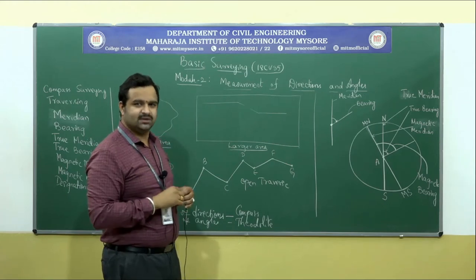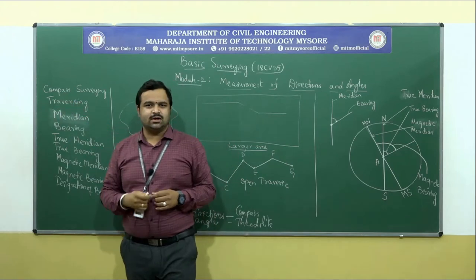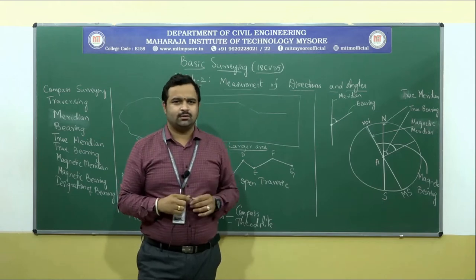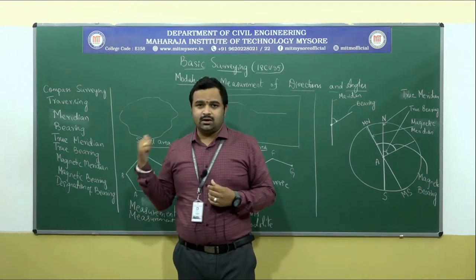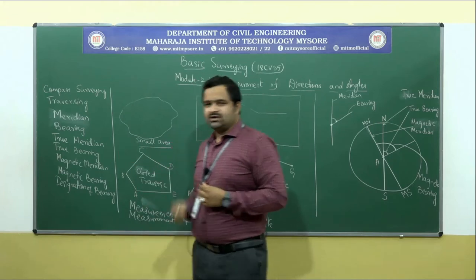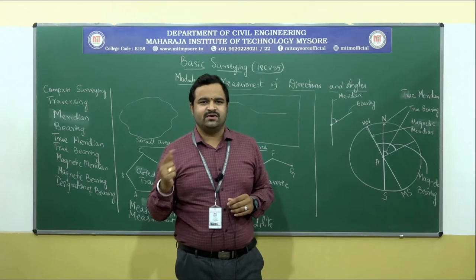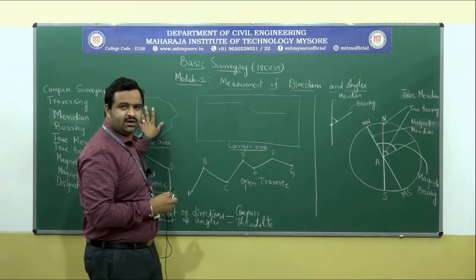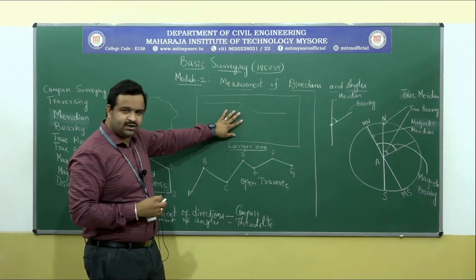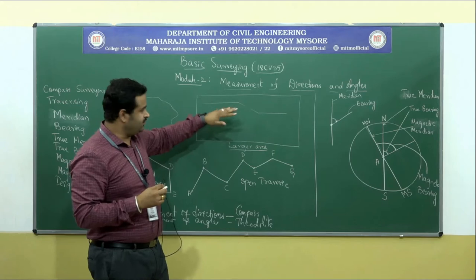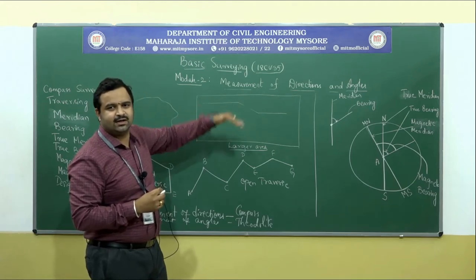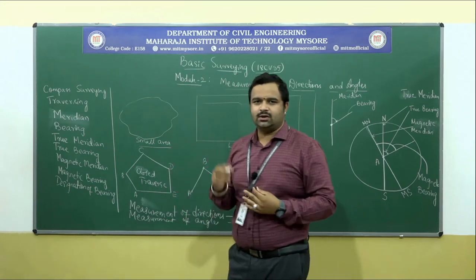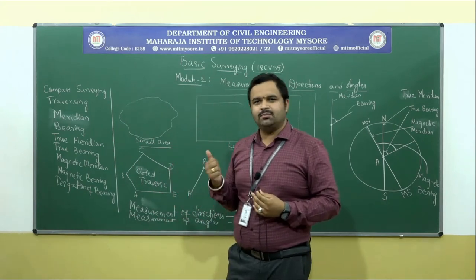Directions can be measured using an instrument called Compass. A compass is nothing but what is used to indicate the north and south direction. There are two types of compass which we are going to deal with in detail: the first one is prismatic compass and the second one is surveyor's compass. Chain surveying is not efficient for larger areas, that is why we have to use an instrument called compass.